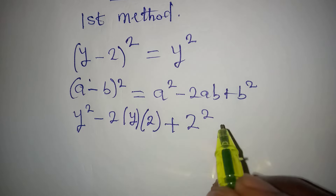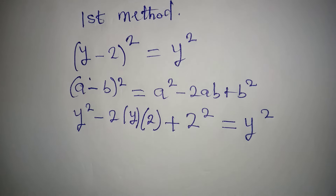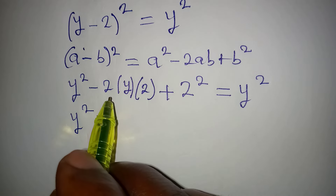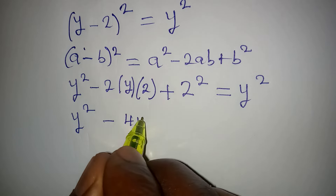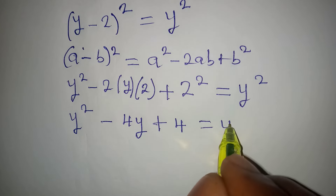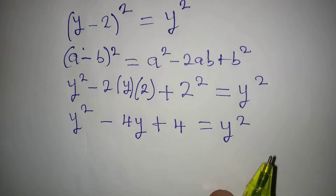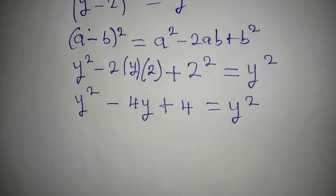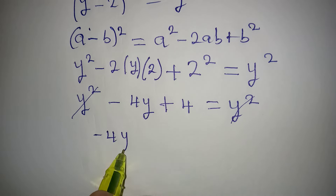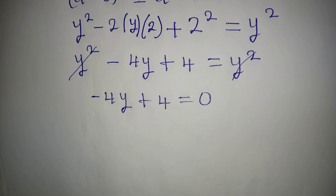Then plus b squared, which would be 2 squared, and the whole of this equals y squared. So we have y squared minus 2 times y times 2, which gives 4y, then plus 4 — that is 2 squared — equal to y squared. Now the y squared on the left and on the right cancel each other, so we have minus 4y plus 4 equal to 0.